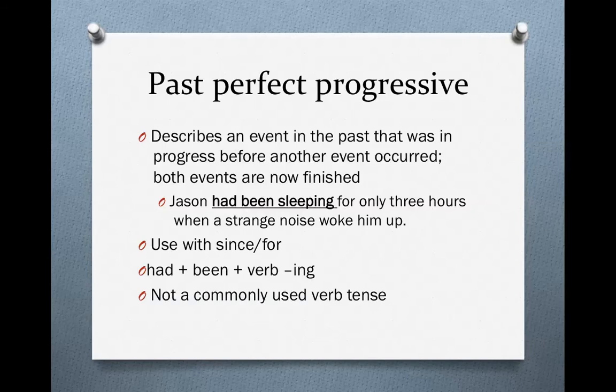What is the difference between the past perfect progressive and the present perfect progressive? The present perfect progressive describes events that are still happening now. The past perfect progressive, however, describes events that are completely finished.